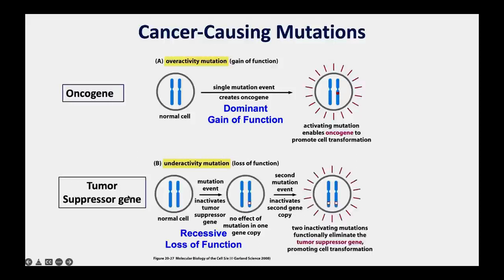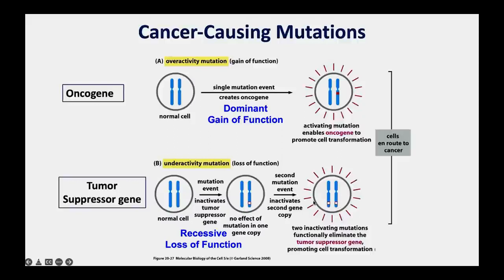For tumor suppressor genes, we also have two copies. They're like the brakes—we have front brakes and rear brakes. For the brakes to go out completely, we need to lose both the front and the back. Similarly, we need to lose both copies of a tumor suppressor gene to completely lose the brakes on the cell cycle and enter the tumor progression pathway.